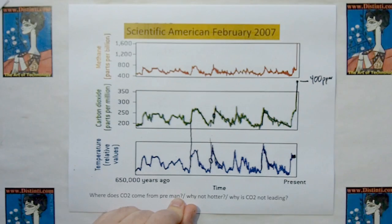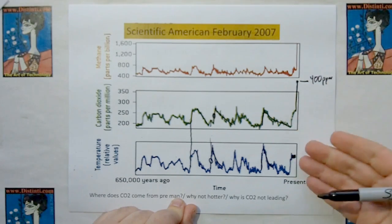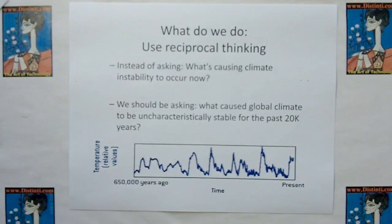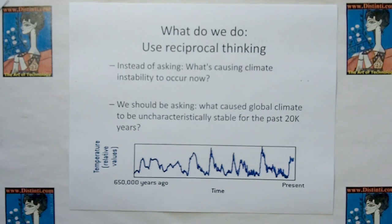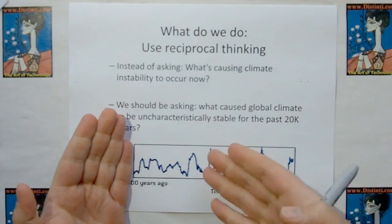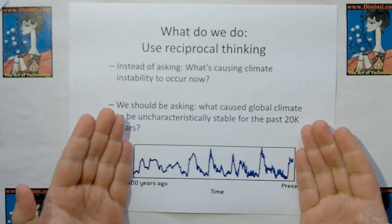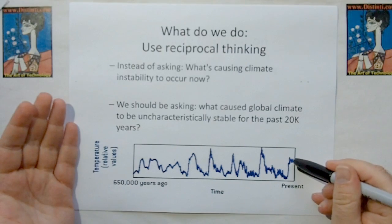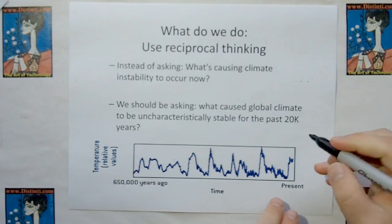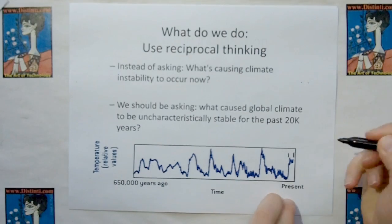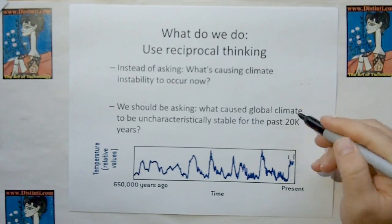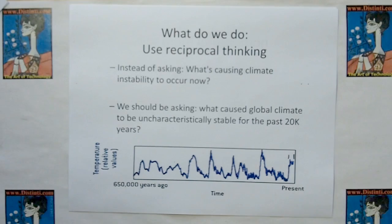So I've shown you two things. I've shown you causality and this blatant contradiction here. And what we have to do is apply some reciprocal thinking. This is the temperature climate data going back showing how violent it is. Instead of asking what's causing climate instability to occur now, we should be asking what caused the global climate to be uncharacteristically stable for the past 20,000 years. It's not what are we doing, it's what are we not doing. That's the question.